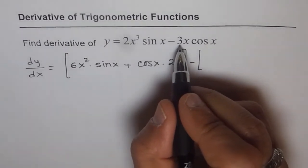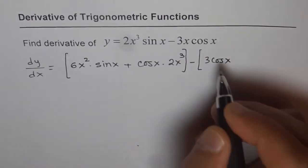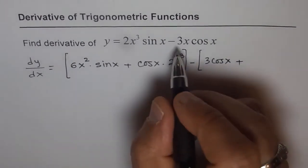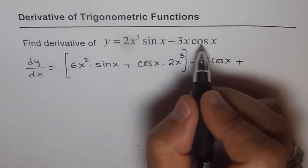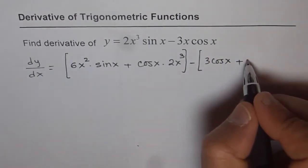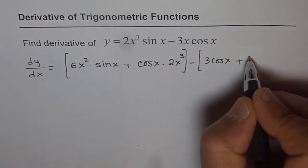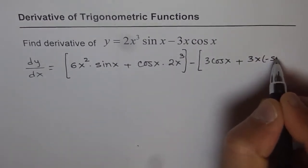Product rule: 3 cos x plus derivative of cos x is minus sin x, so we get 3x times minus sin x.